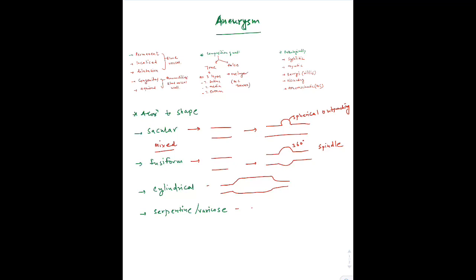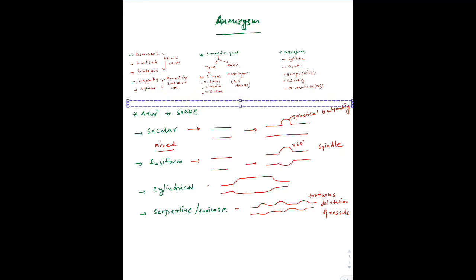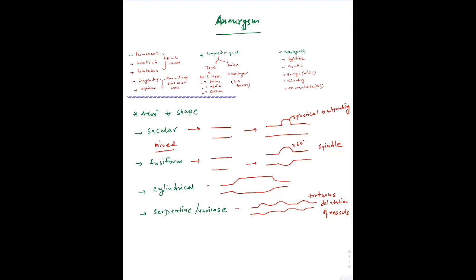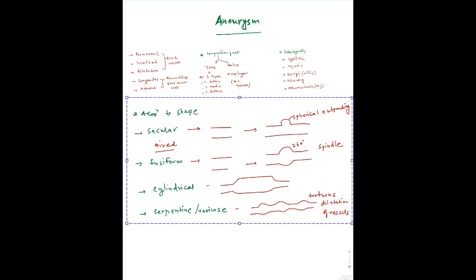One more type is the serpentine aneurysm, which has a serpentine appearance — we can say it is a tortuous dilatation of a vessel. These were the types of aneurysm according to shape. Now we are going to talk about the risk factors — what are the possible risk factors that can lead to aneurysm.